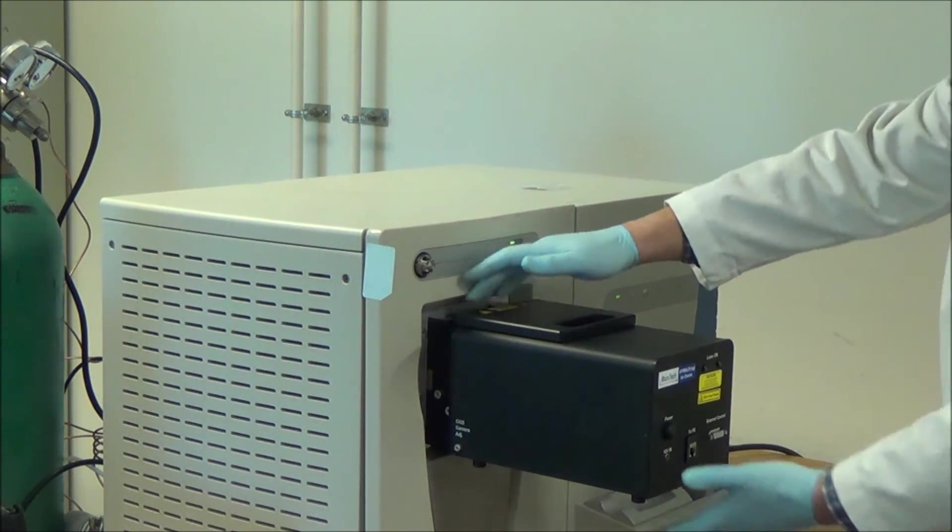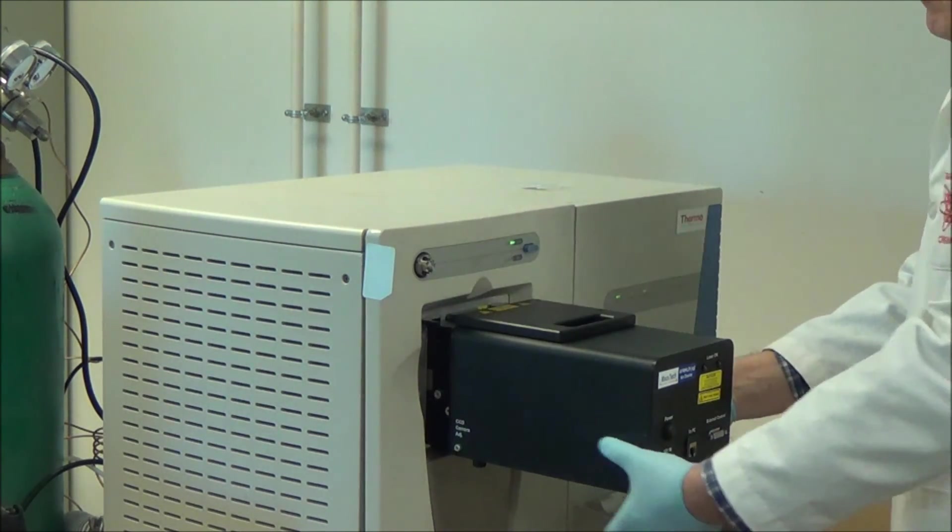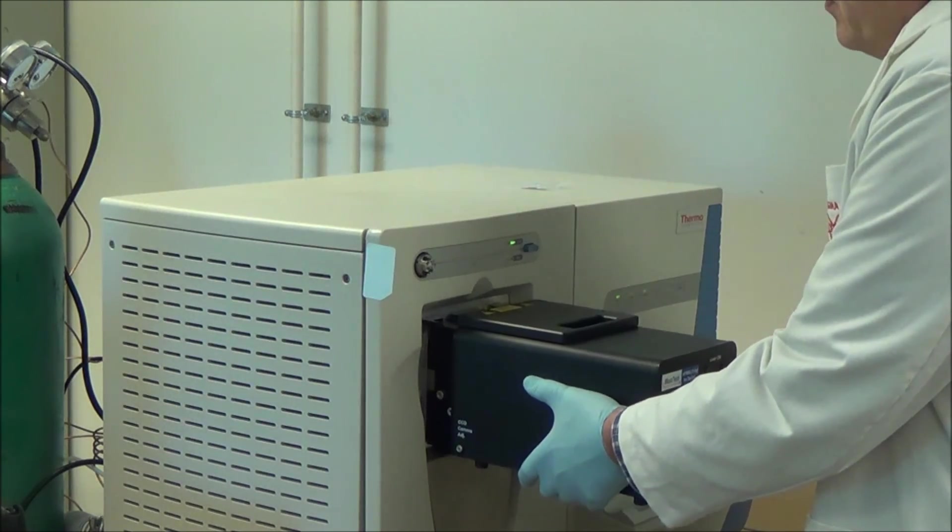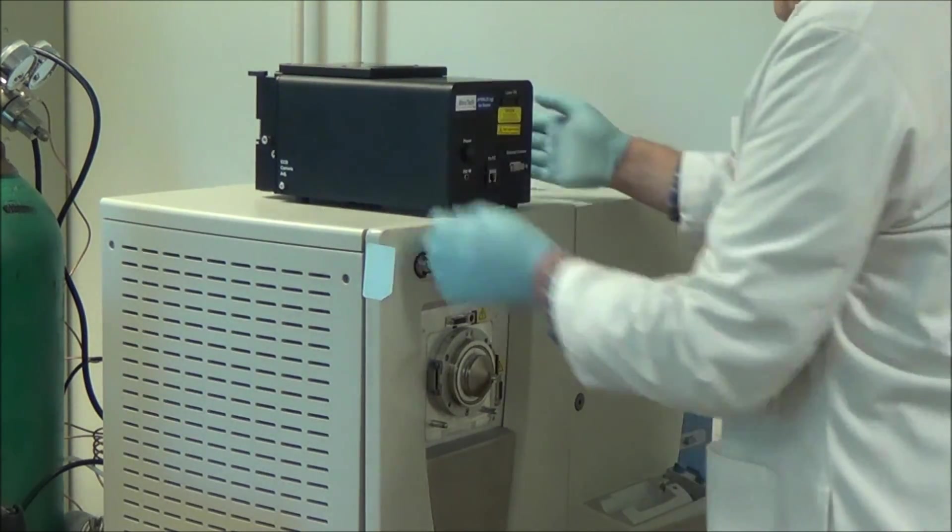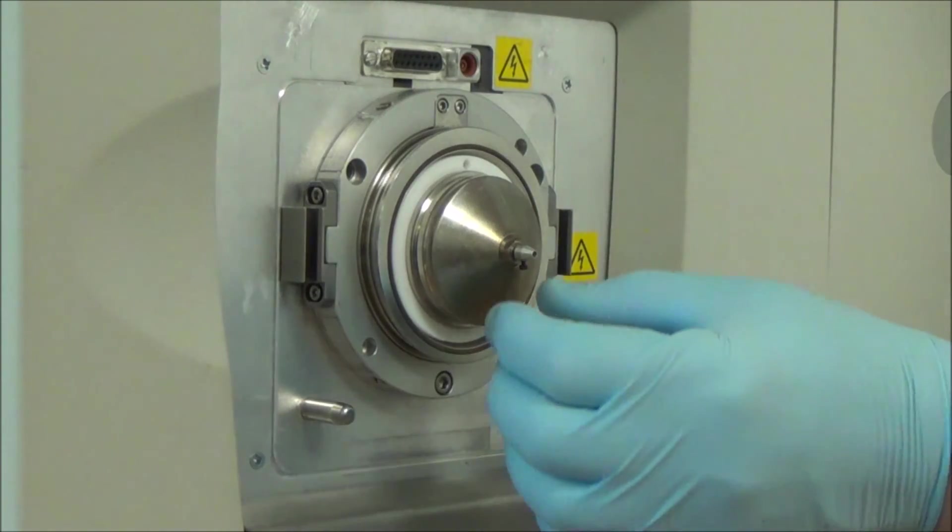The source removal from the mass spectrometer is done in the backward order. Open the locks, remove the source from the MS, and pull out the capillary extender. Please take precautions as the parts may be hot.